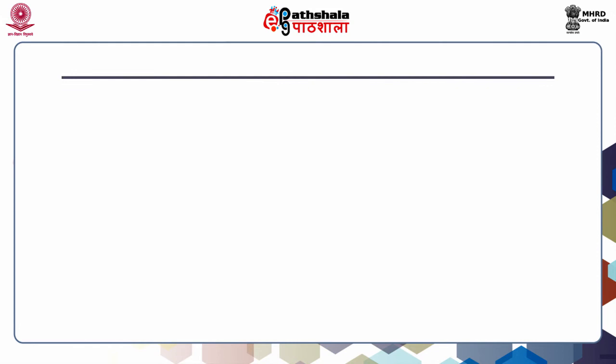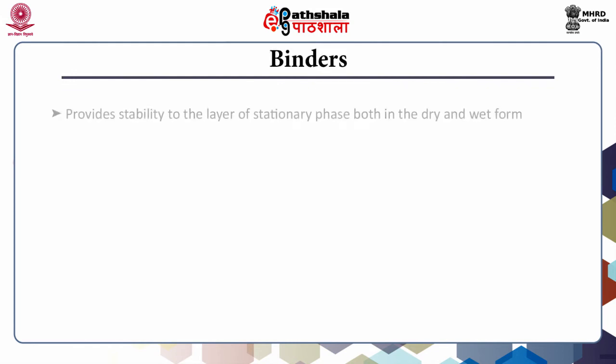The second component is the binder. The layer of stationary phase must be uniform, smooth, thin, and durable to obtain ideal separation, and the coated plate should ensure consistent chromatography properties. Therefore, the use of a binder provides stability to the layer of stationary phase in both dry and wet form.